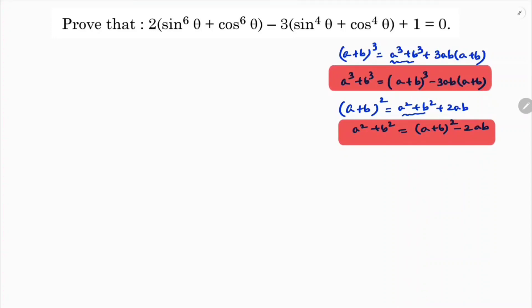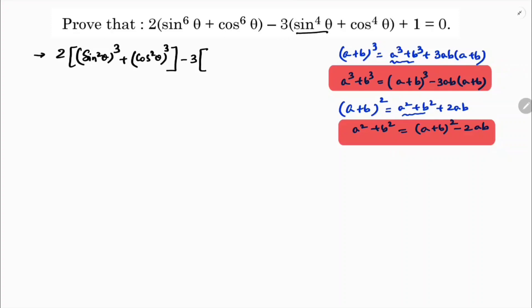First I will change the question in terms of squares. 2 sin power 6 theta I will write as sin square theta whole cube plus cos square theta whole cube, and 3 sin power 4 theta I will write as sin square theta whole square plus cos square theta whole square, plus 1.